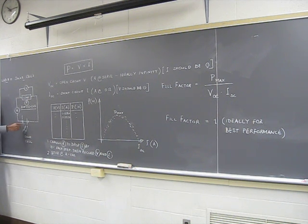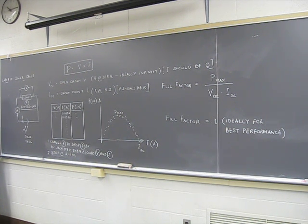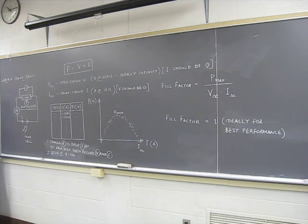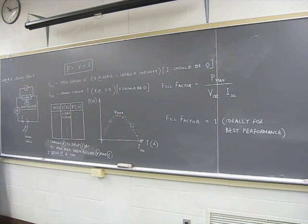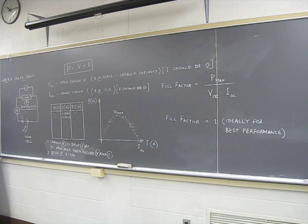Today we have a solar cell. Now, can anybody tell me whether the solar cell is AC or DC? Generally speaking, any guesses? You would think DC — that's exactly right. What we have today is a DC solar cell, and if you look at it you will have two markings: positive and negative.